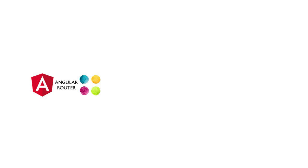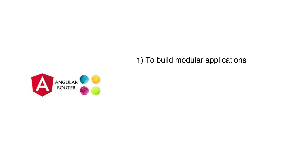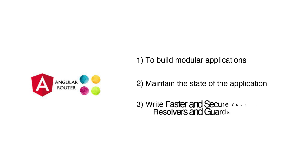In this tutorial, we're going to be talking about routing. Routing is a very popular and important module offered by Angular which allows us to express some aspects of the application's state in the URL. When you go to www.google.com, that is a route. And when you enter the search string and go to the search, it takes you to www.google.com/search?q=hello — this is a second route mapped to google.com. Routing helps us build modular applications, maintain the state of the application, and write faster and more secure code with resolvers and guards.